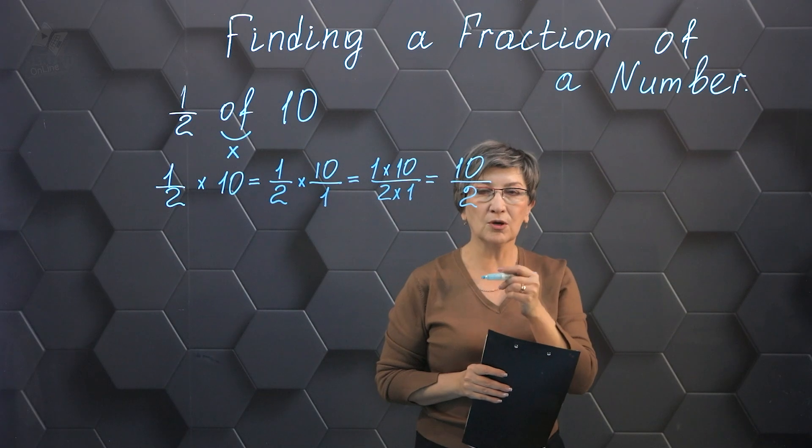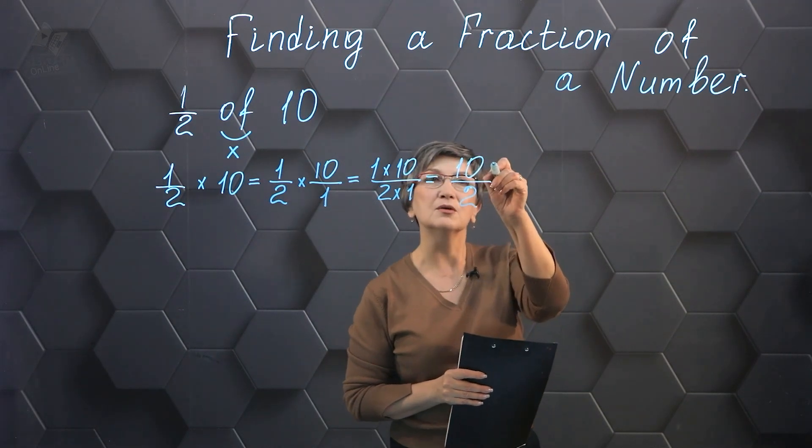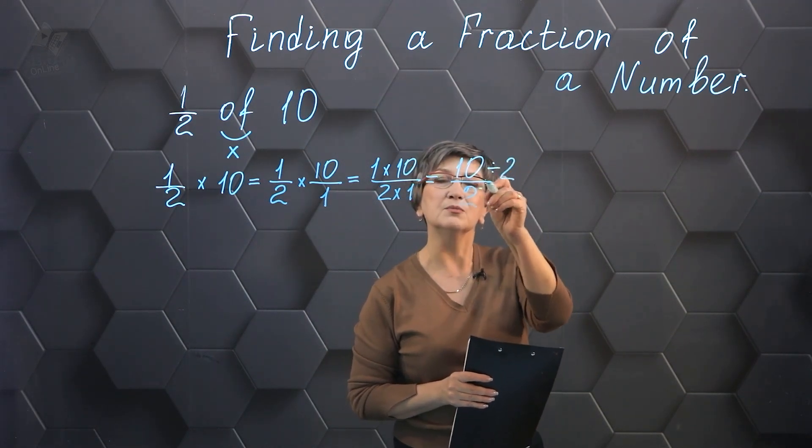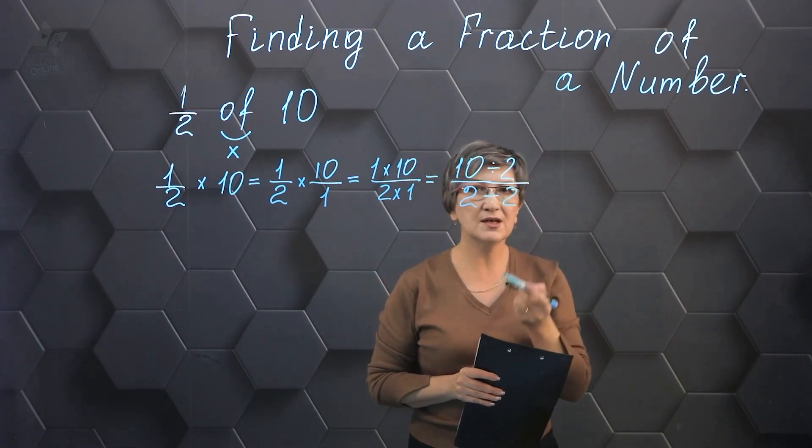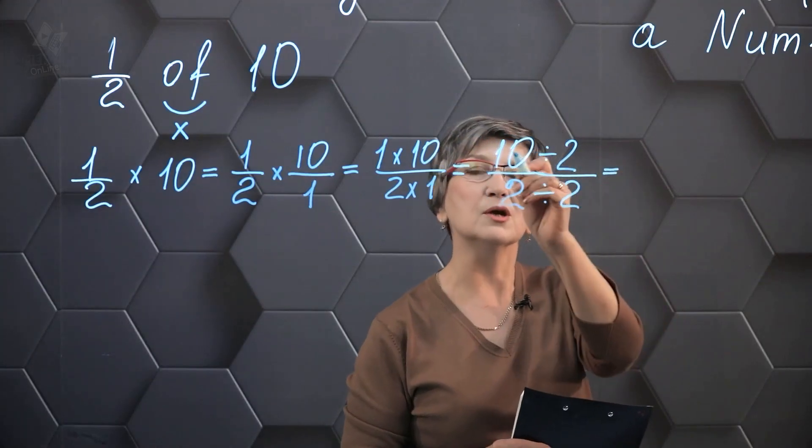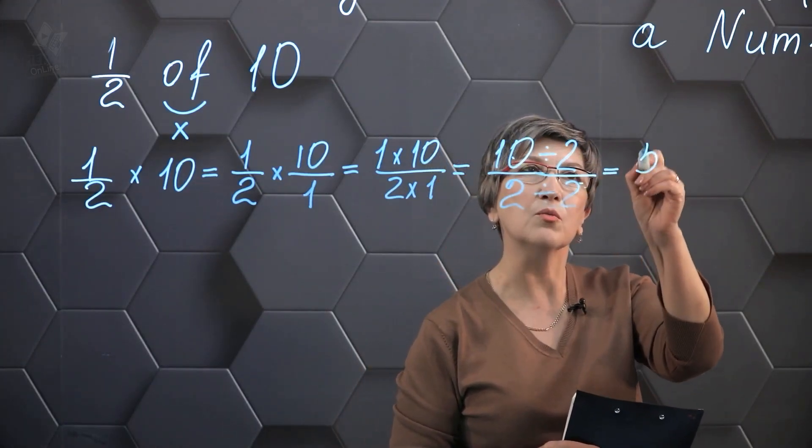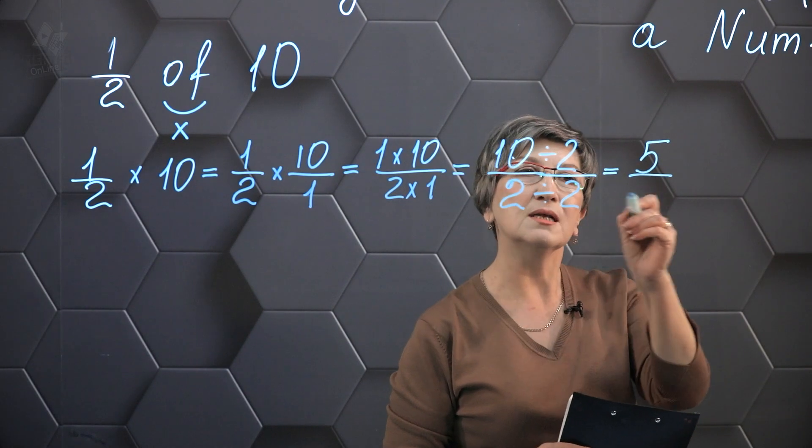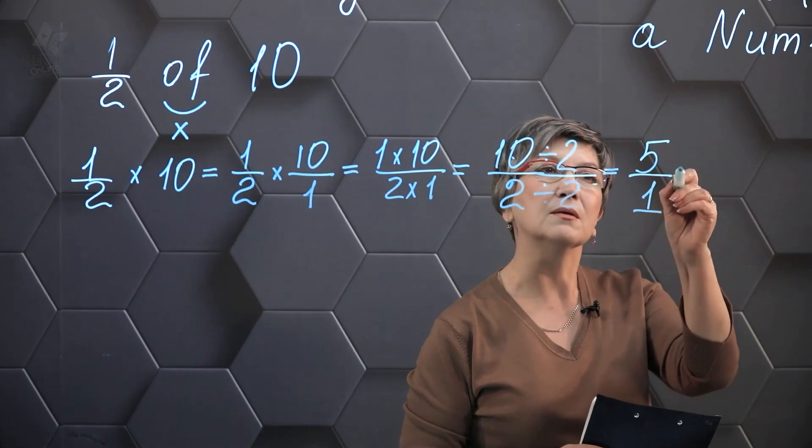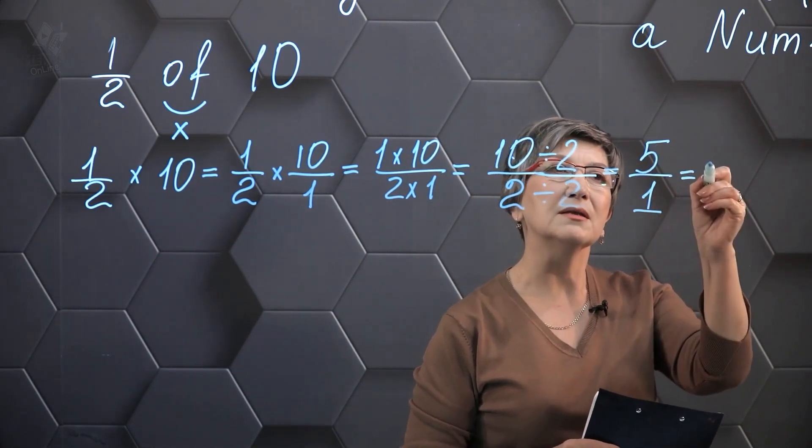In order to reduce this fraction, we have to divide the numerator by 2 and additionally divide the denominator by 2. Therefore, dividing 10 by 2 will give you 5, and 2 divided by 2 will be 1. 5 divided by 1 is going to be 5.